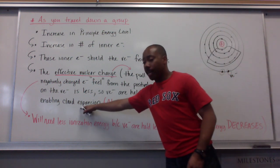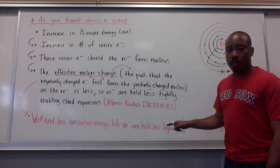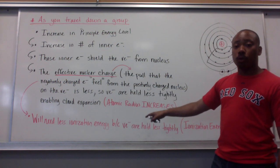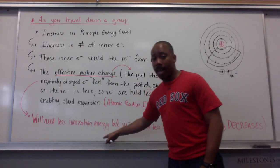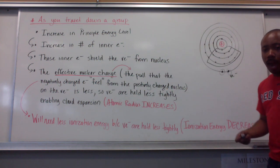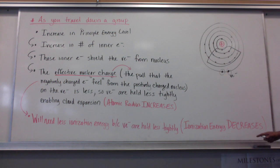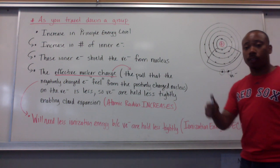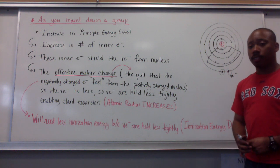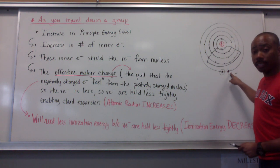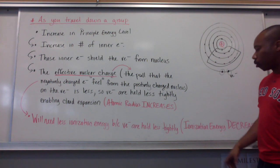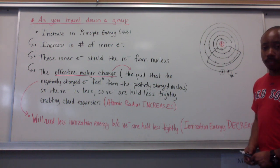The cloud can expand. This increase in atomic radius will mean that you'll need less ionization energy, because your valence electrons are held less tightly. So ionization energy decreases. As your atomic radius increases, your ionization energy will decrease. If these electrons are being held less tightly, then they're easier to take, meaning you'll need less energy. So ionization energy will decrease.